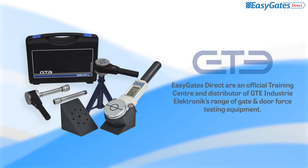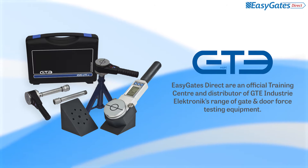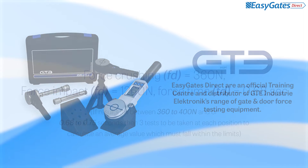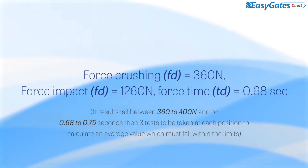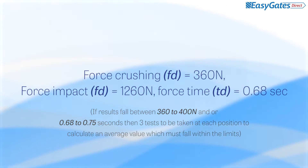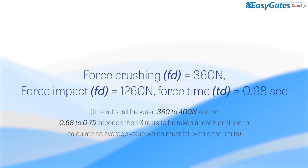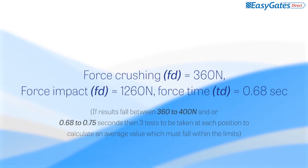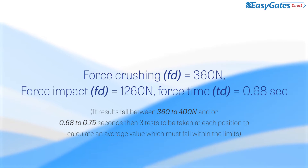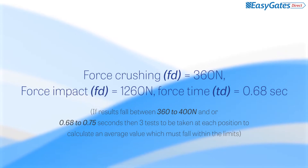You will require a compatible force testing device to take the measurements, which should be accompanied by a measurement extension arm set. For the purposes of these tests, the code of practice has set the benchmark for acceptable pass values at 90% of the limits. If the results fall between the 90% to 100% values, then three tests are to be taken at each measurement position to calculate the average value, which must fall within the limits.